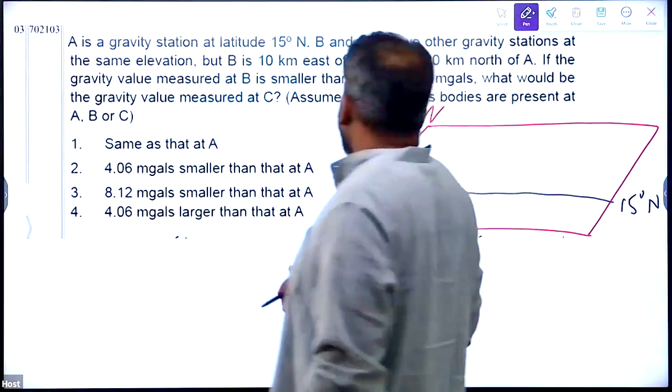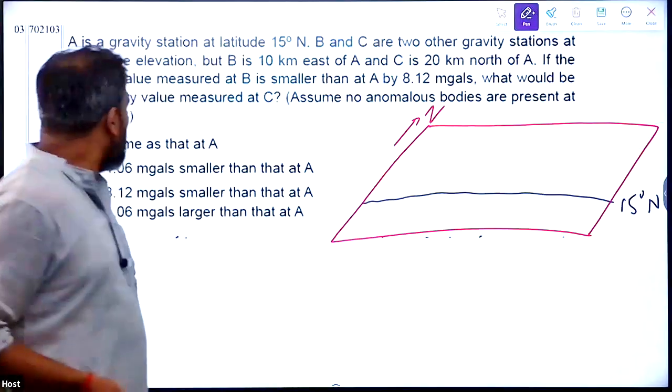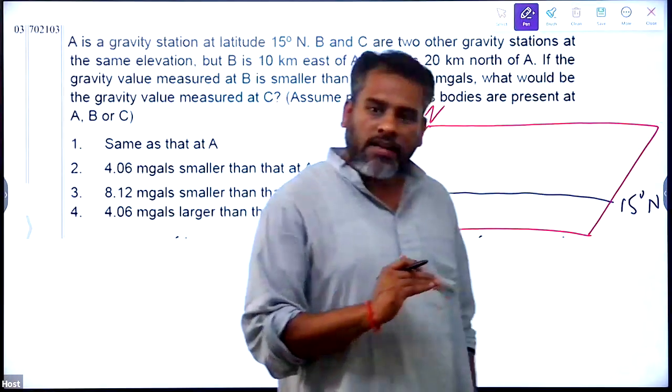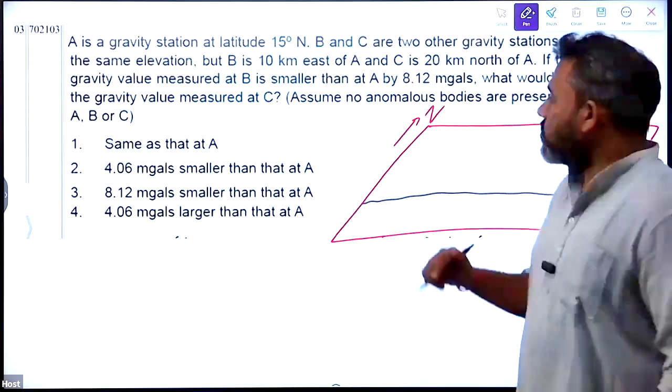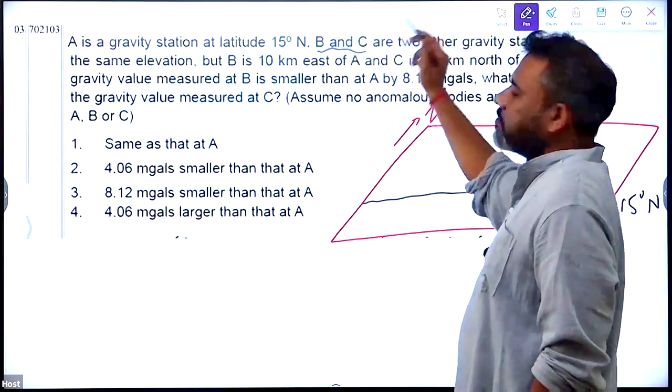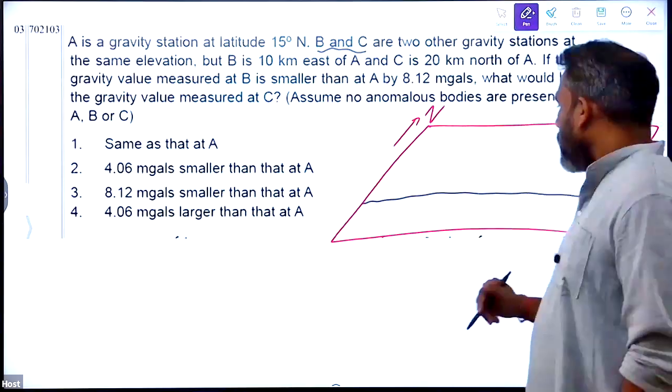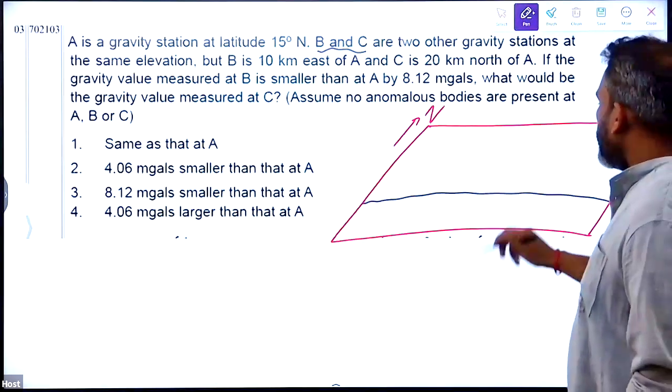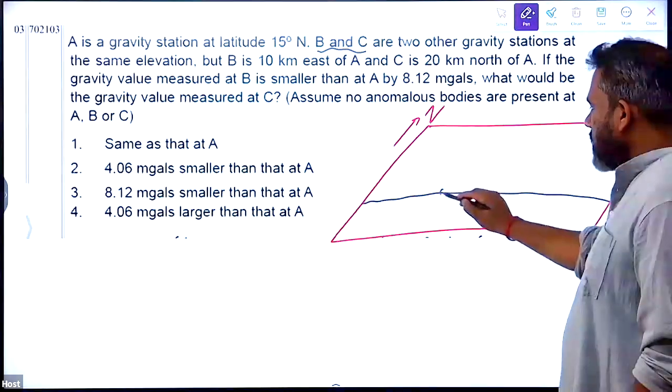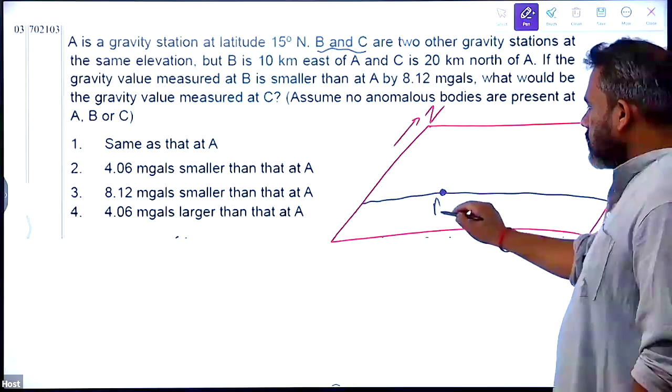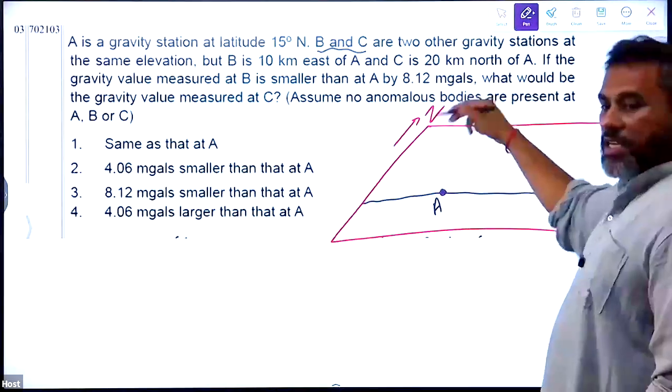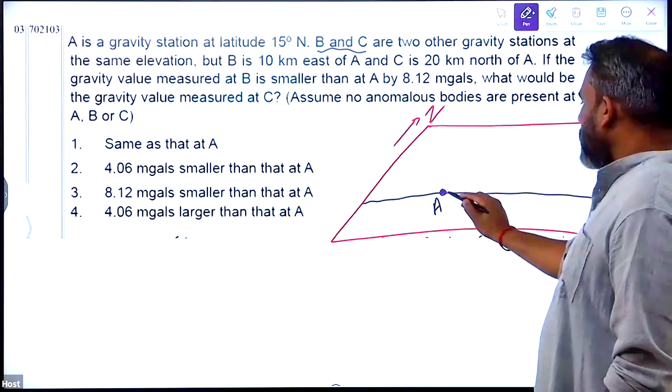B and C are two other gravity stations at the same elevation. So, B and C are at same elevation. B is 10 km east of A. So, let's make A. Let's say A is here. So, it says B is 10 km east of A. So, B here will be.